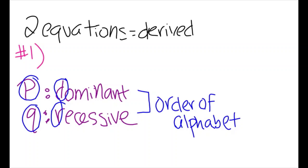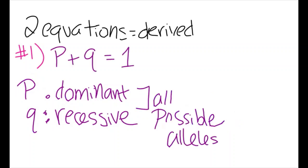A way to remember which is which is by knowing that P comes before Q in the alphabet, and the letter D in dominant comes before R in recessive. We know that these two values, P and Q, must add up to 1, since together they represent all the possible alleles for that trait in the population. So P plus Q equals 1 will be our first equation.